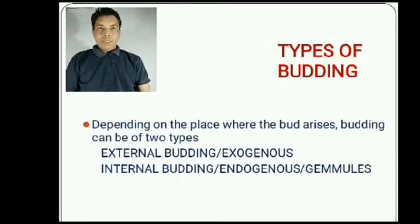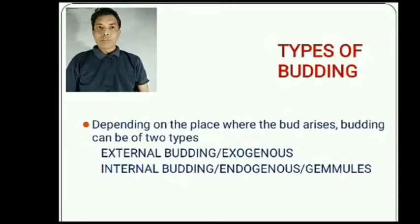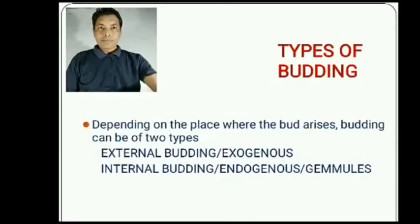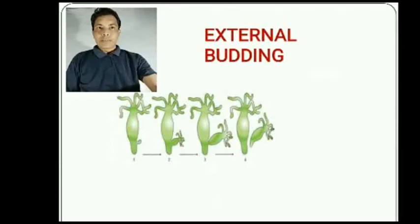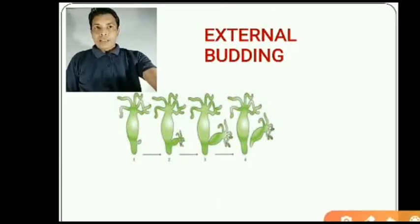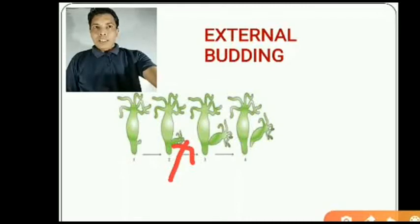Depending on the place where the bud arises, budding can be of two types: external budding (exogenous) or internal budding (endogenous), also called gemmulation. In external budding, as seen in hydra, an outgrowth arises and is detached from the parent body to become a new individual.